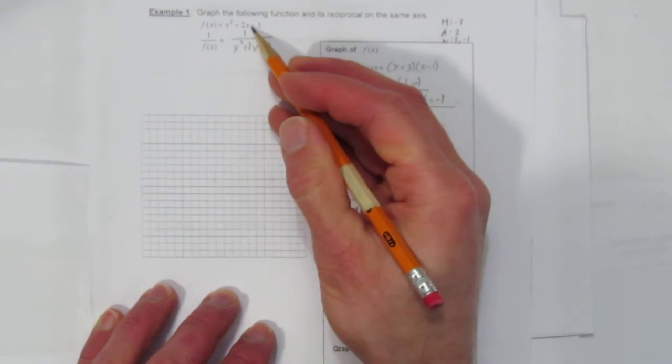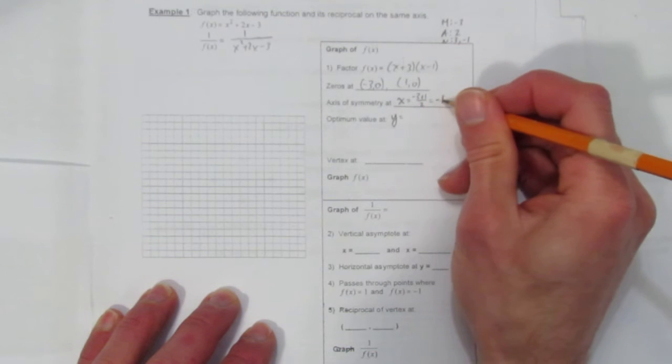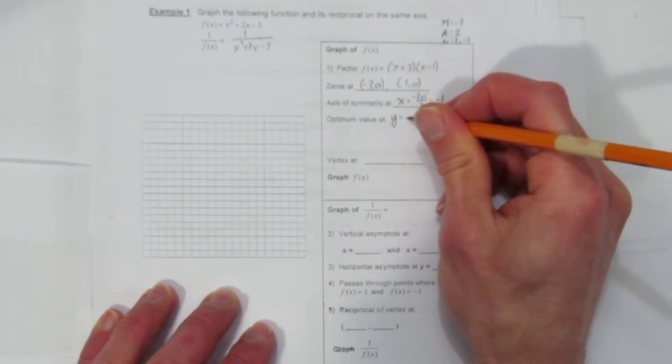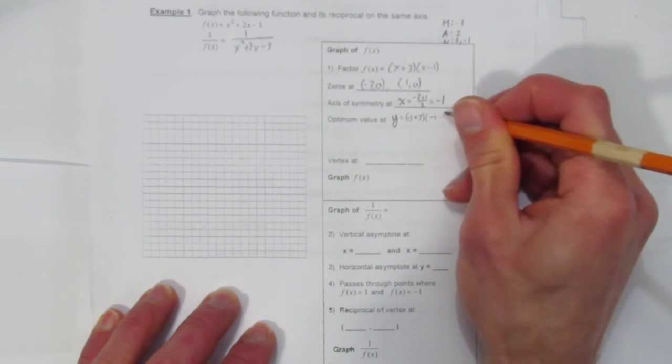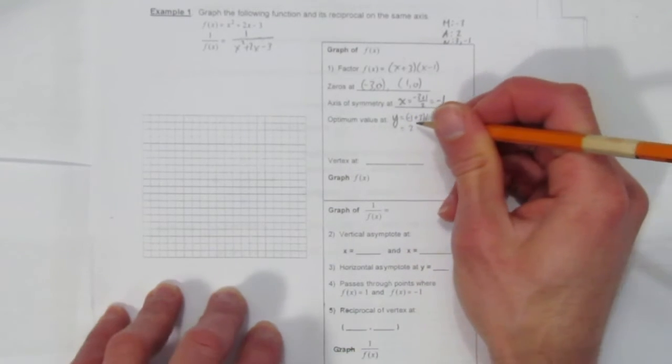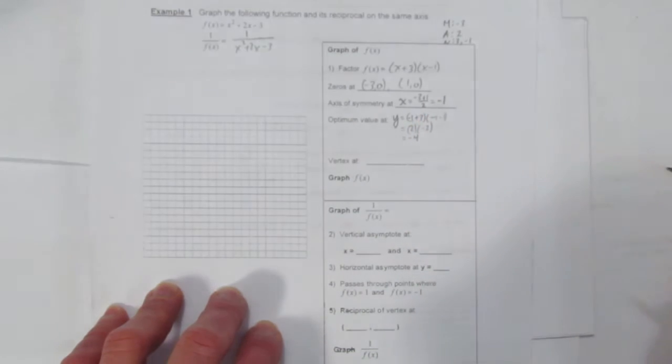To either equation, you could sub it into the standard form or the factored form. I'm going to use the factored form. Sub in the x value of the vertex, you get (-1 + 3) times (-1 - 1), which is 2 times -2. Then you get -4.